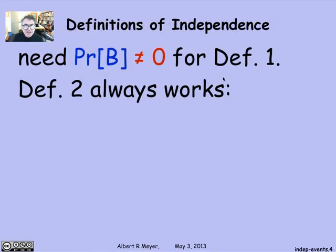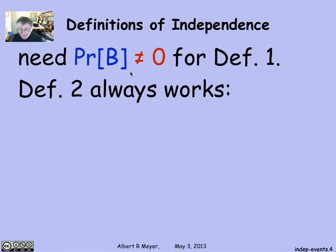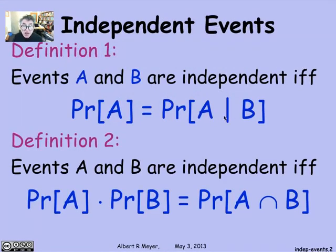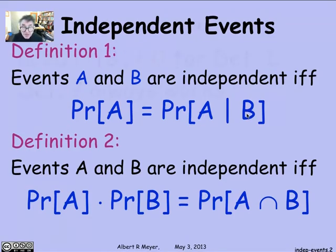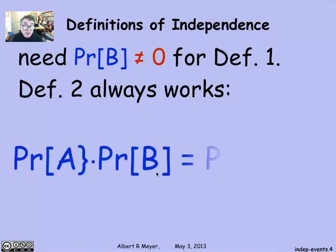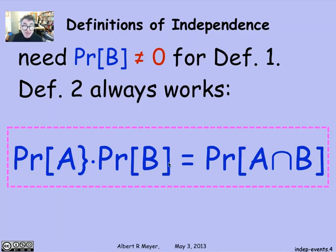Definition two has the slight advantage that it always works, whereas definition one implicitly requires that the divisor—remember probability of A given B is defined as the probability of the intersection divided by the probability B—is only defined if the probability of B is positive. Whereas the second definition always works and we don't have to put a proviso in about the probability of B being non-zero.